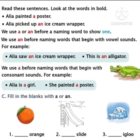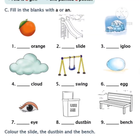I think you understood, children. Now let's complete section C. I am reading the question near section C: Fill in the blanks with A or AN. You are given nine pictures and the names of the pictures below. You need to write whether you should use A or AN. Children, are you ready with your pencil and eraser? Shall we start? Now the first one — orange. Orange starts with the letter O. Is O a vowel or consonant? Yes, you are right, it's a vowel. So children, write AN in the first blank.